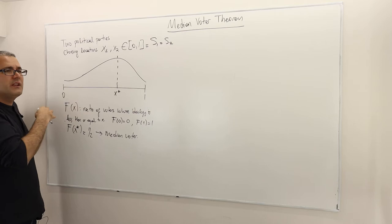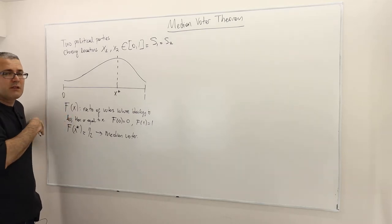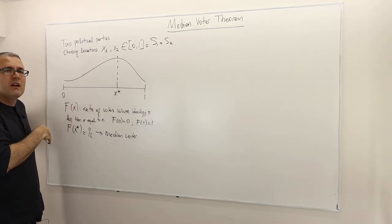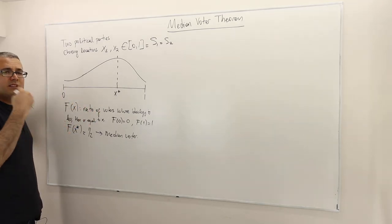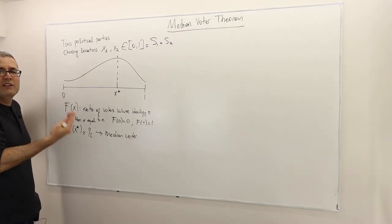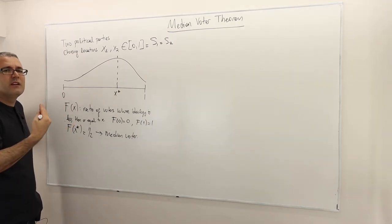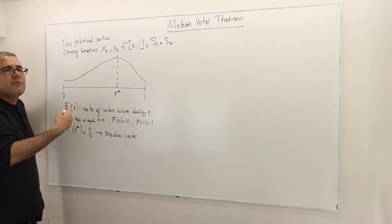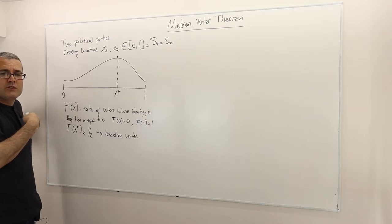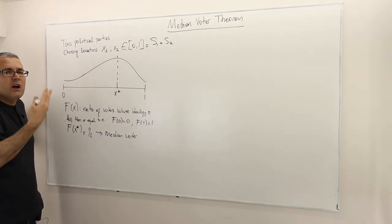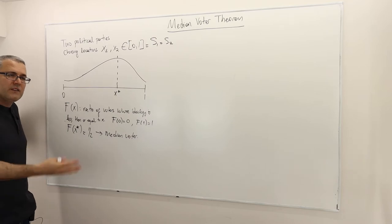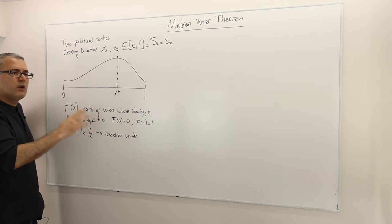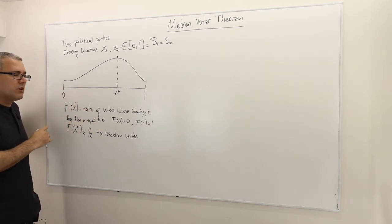The voters are not strategic players — that's partly a simplification assumption, but it also makes sense. In a general election with millions of people, as a single voter there is no way I can change the election outcome. Therefore, voting truthfully — meaning voting for the party I feel closer to myself — is the optimal thing to do. So we assume voters simply vote for the political party that is closest to themselves.